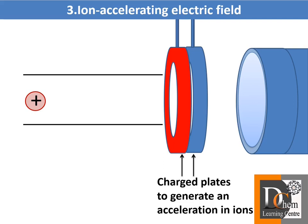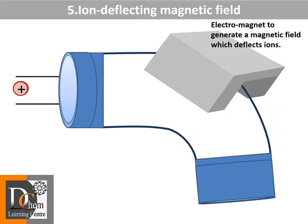An electric field is generated using charged plates, which accelerate these gaseous ions. The gaseous ions are accelerated and directed into a magnetic field.